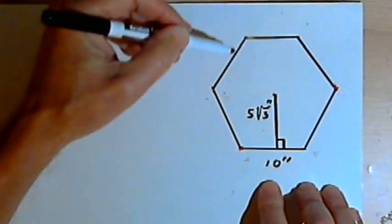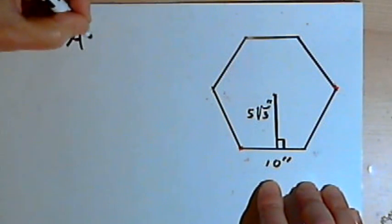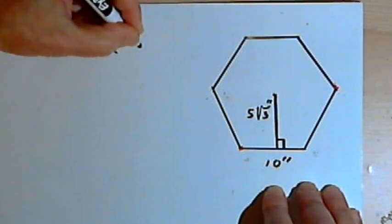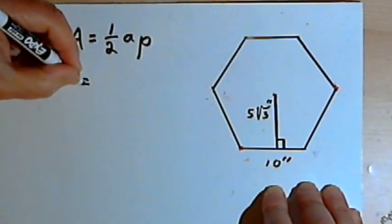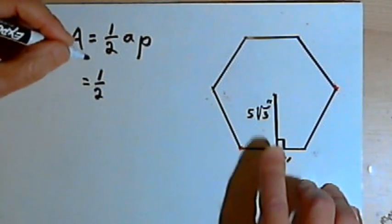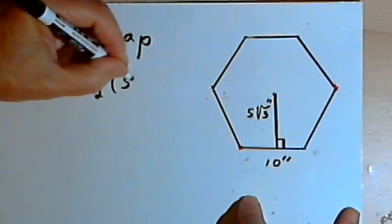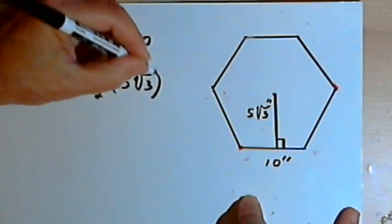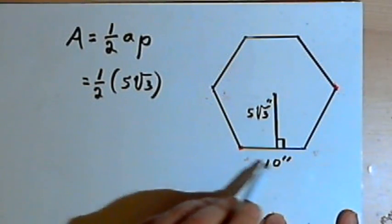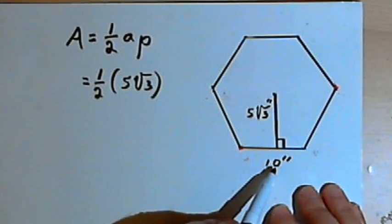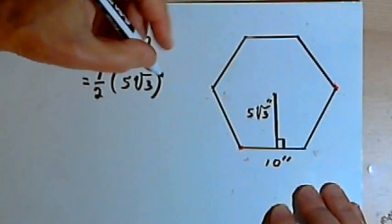So let's take this hexagon. I'll take the general formula that I have. The area equals one-half AP. I've been given the fact that the apothem is 5 times the square root of 3 inches. And I've got a side length of 10, which means since it's a hexagon, there are six sides, I'll multiply 10 times 6 and get 60.